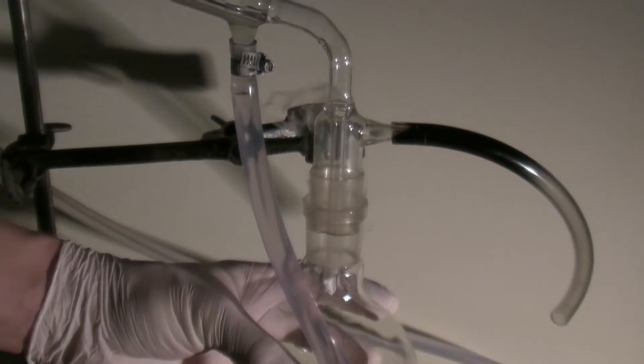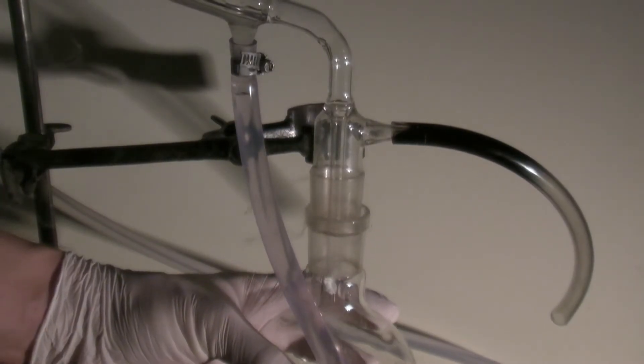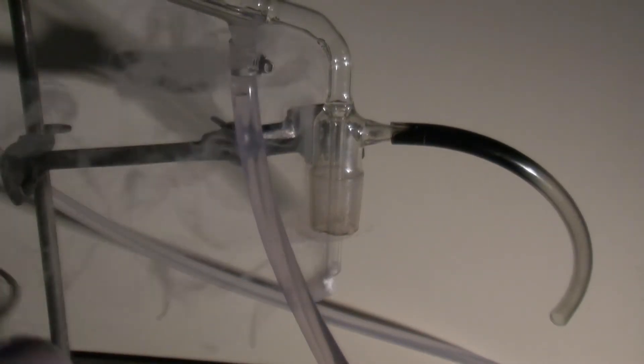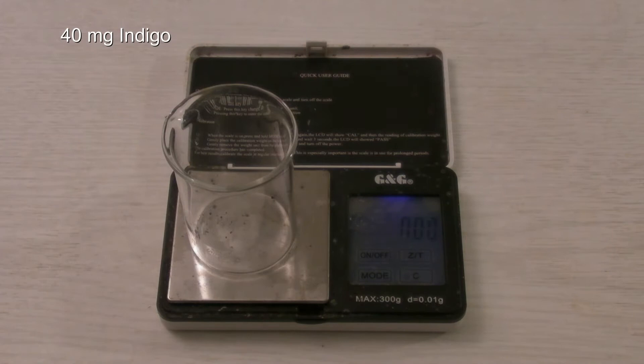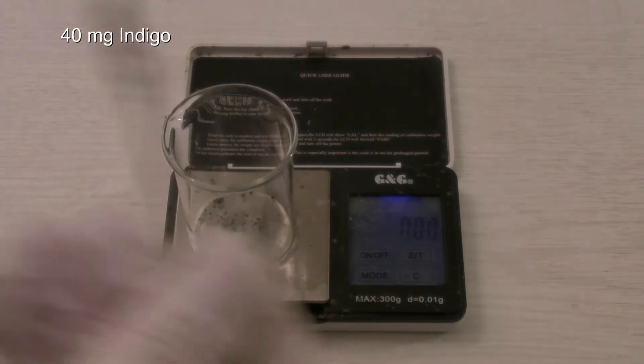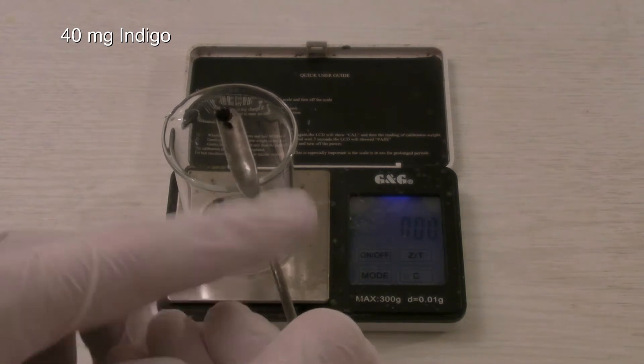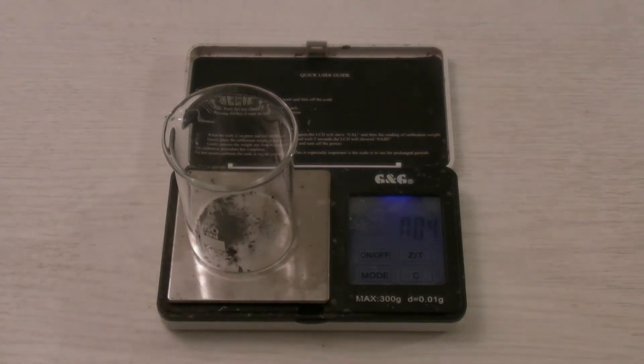Usually, sulfur trioxide is used in the sulfonation, but in this case it is not needed. For the experiment, about 40 milligrams of indigo were weighed out. 20 milligrams would be better. The scale was only able to weigh out up to a tenth of a gram, so a spatula tip of indigo could also be used.